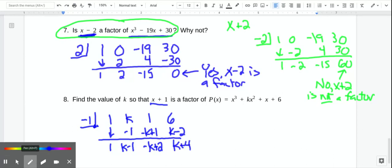And then we're going to add 6 plus k minus 2, which is going to be k plus 4. So remember, we want this to be a factor, which means we need to have a remainder of 0. So k plus 4 has to be 0. And when we solve that, we find that k equals negative 4. So if k is negative 4, then x plus 1 is a factor of that polynomial.